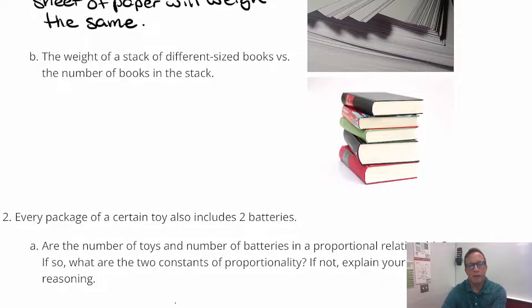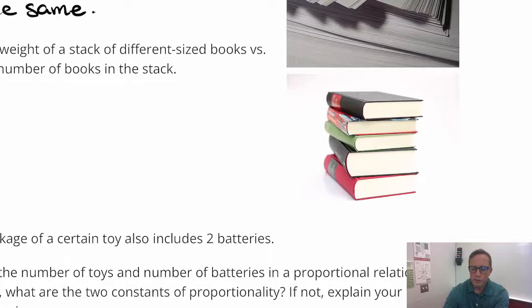For B, the weight of a stack of different sized books versus the number of books in the stack. Okay, now you can definitely tell, in the picture right here, this book right here, use an arrow, that book right there is definitely the biggest, right? And it looks like, to me, just eyeballing it, that looks like the smallest.